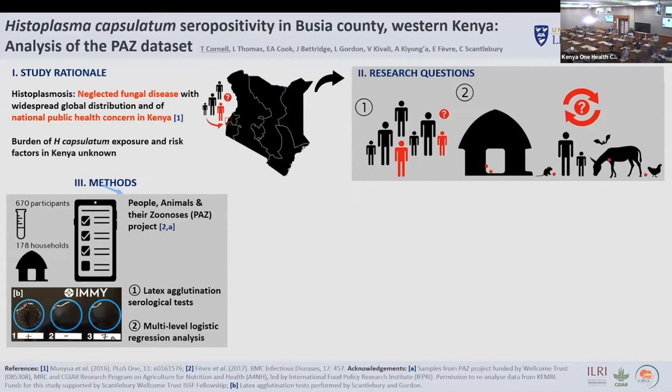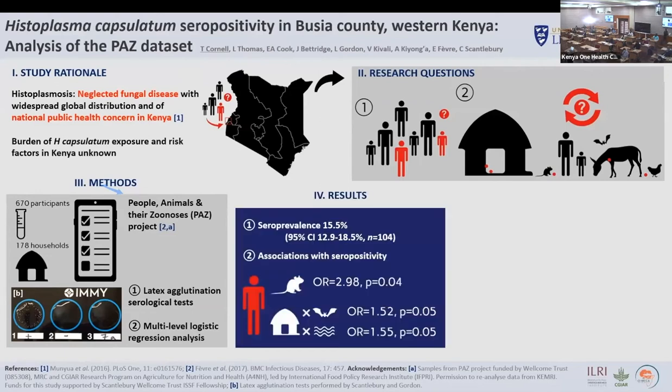What were our research findings? A seroprevalence of 15.5% was measured. A multivariable logistic regression model was constructed which identified a statistically significant association between seropositivity and respondents reporting observation of rats within the household.